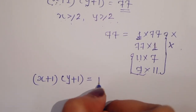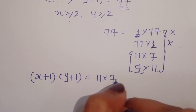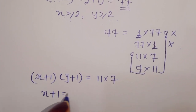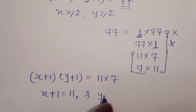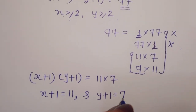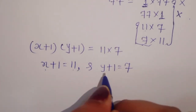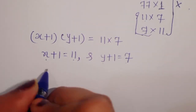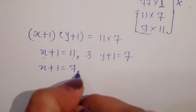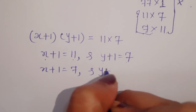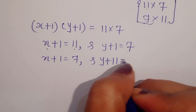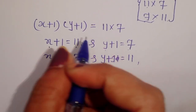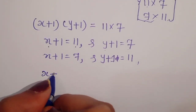So we write x plus 1 times y plus 1 equals 11 times 7. In the first case, x plus 1 equals 11 and y plus 1 equals 7 — here both x and y are greater than or equal to 2, satisfying the condition. In the second case, x plus 1 equals 7 and y plus 1 equals 11.